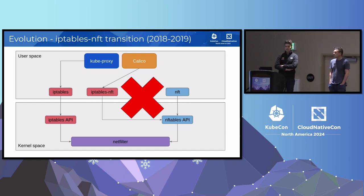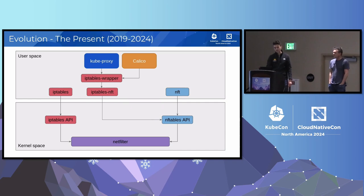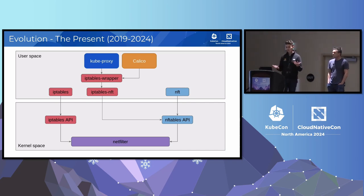It caused some problems in the Kubernetes space. As we went through this switch, it was important to make sure that everybody was using the same version of the tool, otherwise you got some unexpected and undesirable behavior. Both Calico and KubeProxy ultimately ended up with auto-detection logic that helps select what version of the tool chain is being used on the system. Nowadays in 2024, this pretty much always resolves to iptables-nft.